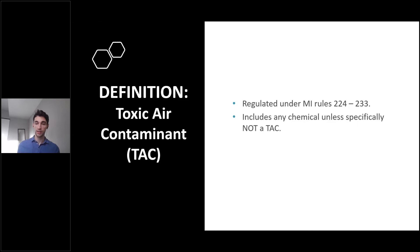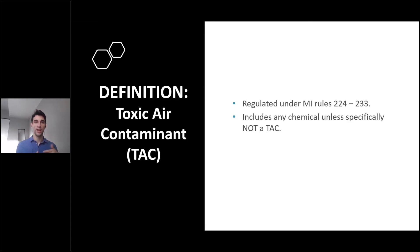The next family of air contaminants is toxic air contaminants, typically abbreviated as TACs. According to Part 1 of the Michigan Air Pollution Control Rules, a TAC is any substance that is or may become harmful to public health or the environment. Any substance can be regulated as a TAC except for a specific list of substances that have been excluded, as stated in the definition of TAC in the Part 1 rules.